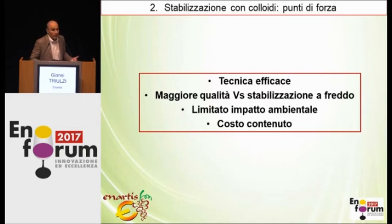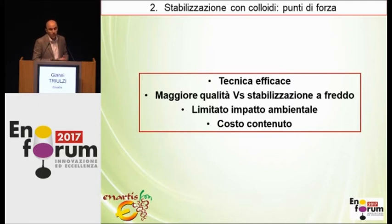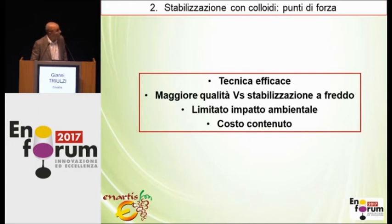Strengths of stabilization using colloids — it is an effective technique. Comments have already been made about wine quality depending on the stabilization treatment used. The cold stabilization technique is still, we think, the reference technique. Consider that this is a subtractive and non-specific technique — we remove potassium bitartrate and much more. By lowering the temperature, we potentially increase the risk of oxidization because this increases the possibility that oxygen is absorbed. I would like to focus now on the environmental impact and also the costs of this strategy.